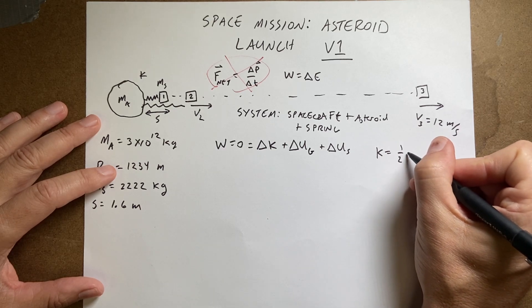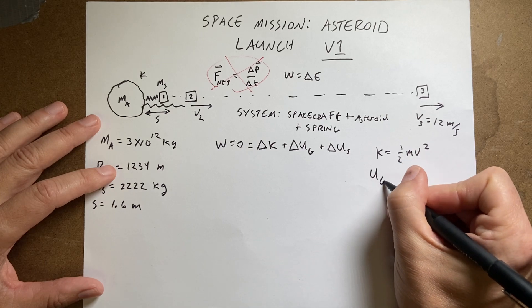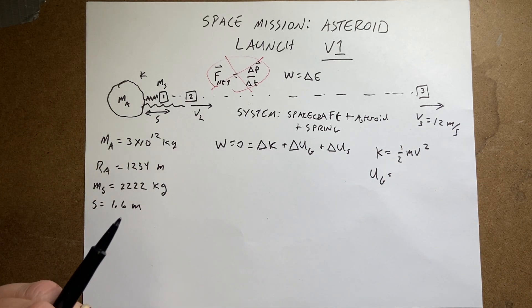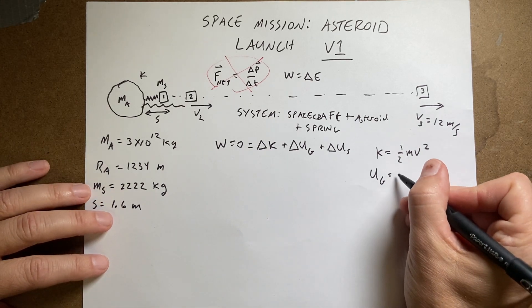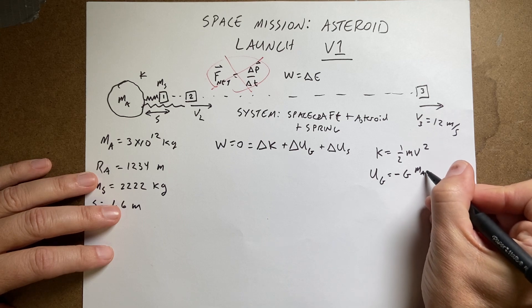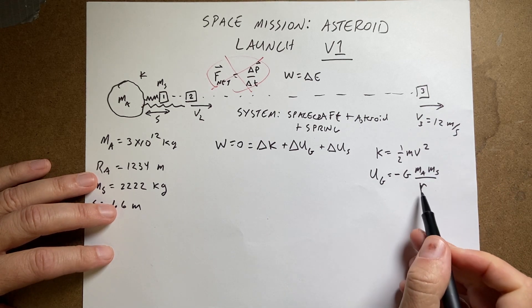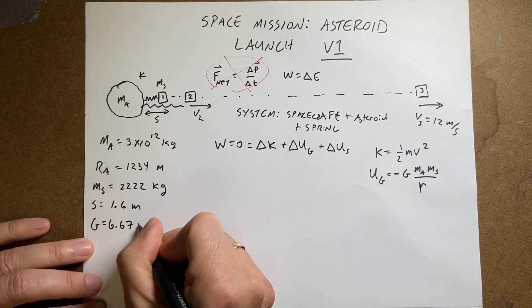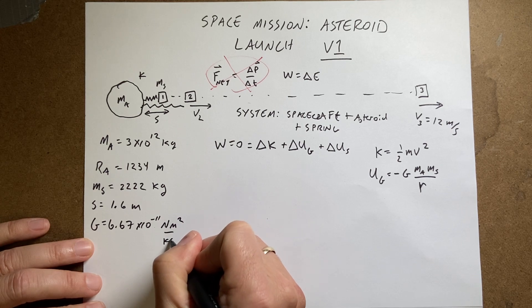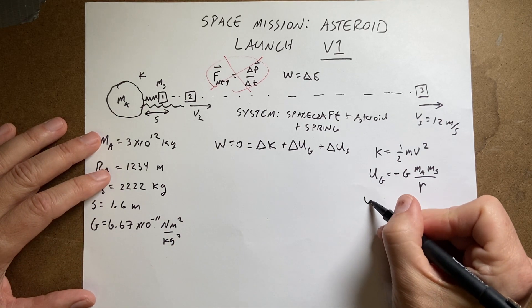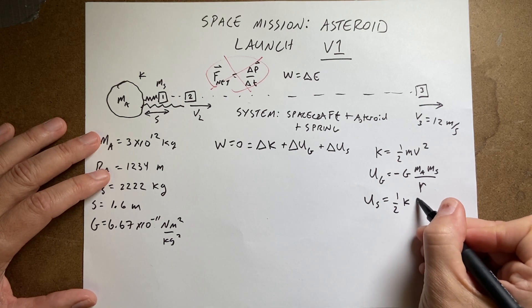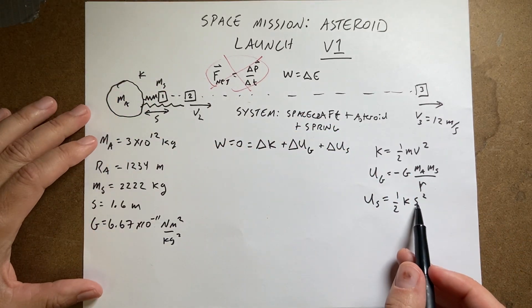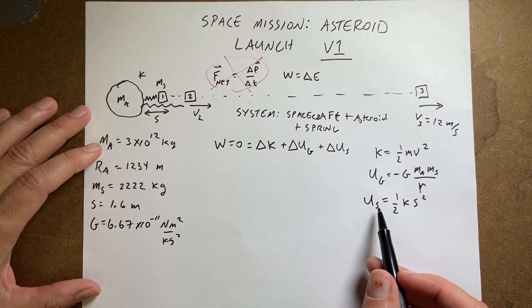Kinetic energy is defined as one-half mv squared. Gravitational potential energy — you can find this by determining the work done by gravity as you move over a distance, and since it doesn't depend on path we can make it a potential energy — looks like negative G times mass of the asteroid times mass of the satellite over R, where R is the distance between their centers. G equals 6.67 times 10 to the negative 11 Newton meters squared per kilogram squared. The spring potential energy is US equals one-half K S squared, where K is the spring constant and S is the amount it's compressed or stretched.